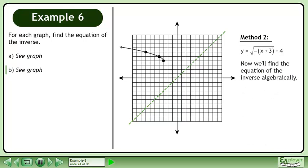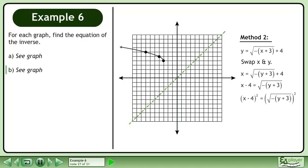Now we'll find the equation of the inverse algebraically. Swap x and y. Bring 4 to the left side of the equation. Now square both sides to eliminate the radical. This gives us the quantity x minus 4 squared equals negative the quantity y plus 3. Multiply both sides by negative 1. We arrange the equation so y is by itself. We have now found the equation of the inverse graph. The domain is x is greater than or equal to 4. This is the same result we obtained in method 1.